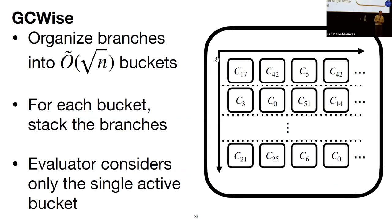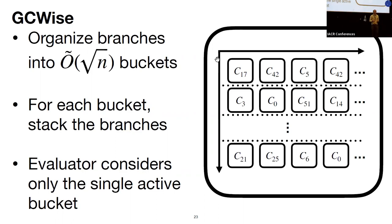To summarize the core technical ideas of GCWise — garbled circuits with sublinear evaluator: we organize branches into square-root-size buckets, stack the branches within each bucket, and at runtime the evaluator considers only one bucket. This achieves the combination of sublinear communication cost and sublinear computation.